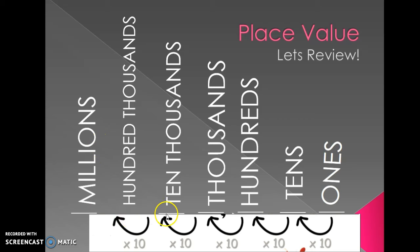Each place value has one line to represent the digit that it can hold in its value. Each place value is also ten times larger than the previous place value to its right. For example, the tens place value is ten times larger than the ones, the hundreds is ten times larger than the tens, and so on and so forth.